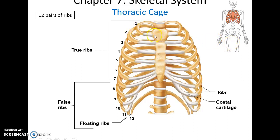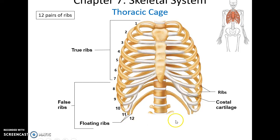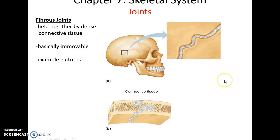Many ribs connect directly or indirectly to the sternum via costal cartilage, which is hyaline cartilage. The ribs come in three categories: true ribs — pairs one through seven — attach directly to the sternum; false ribs — eight through twelve — either attach to the costal cartilage of rib seven or don't attach to the sternum at all; and the last two, ribs eleven and twelve, are called floating ribs because they do not attach to the sternum.